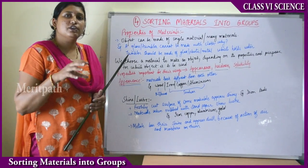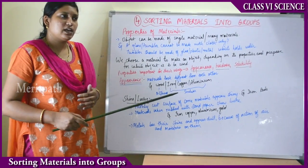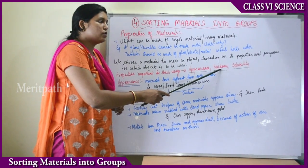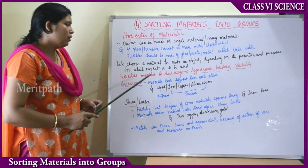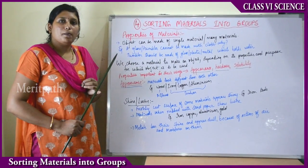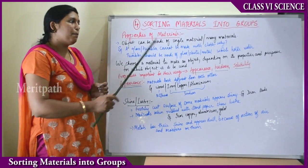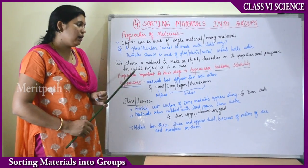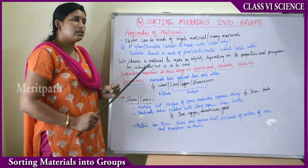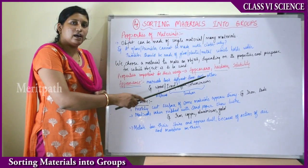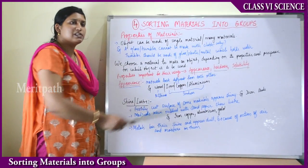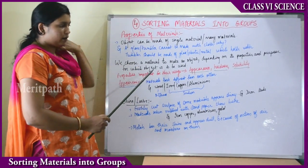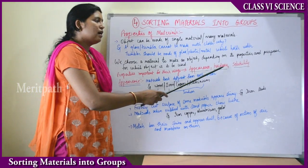The properties which determine which materials have to be used are appearance, hardness, and solubility. So to make any object we have to consider the properties of that object and the purpose for which it is to be used. The properties important for their usage that we will study are appearance, hardness, and solubility.